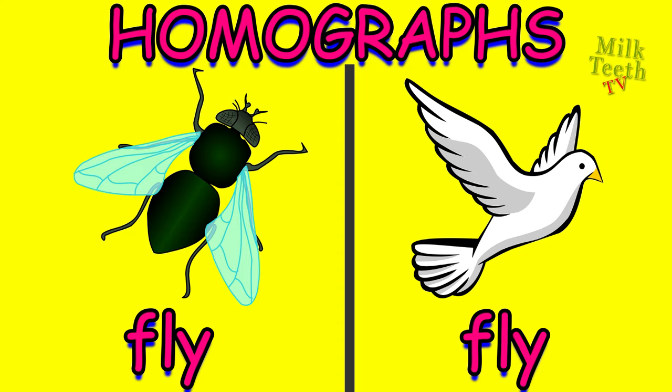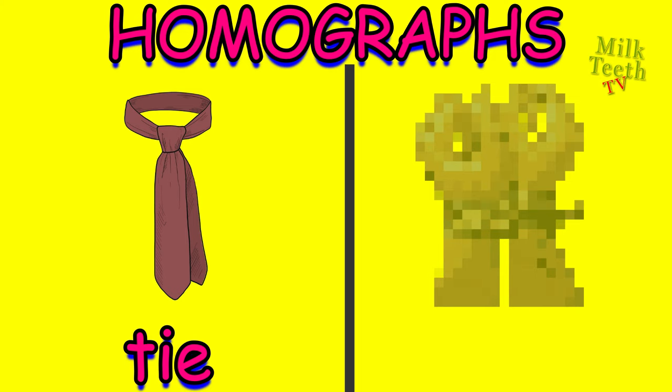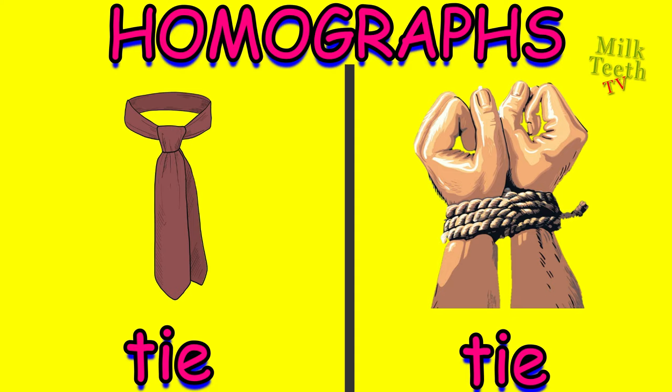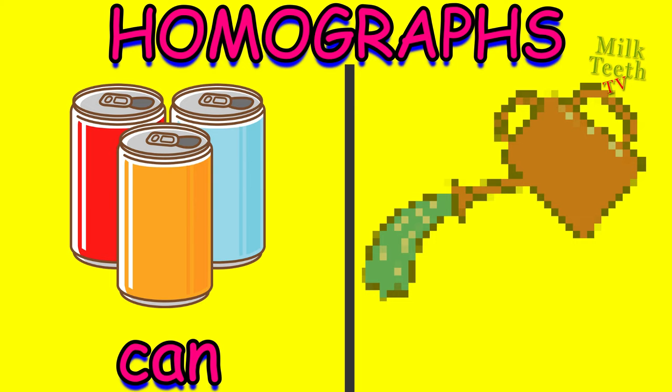Tie — it is used to wear on the shirt. And tie — it is a verb which means to tie something. Can — or the juice can. And can — a watering can, used to water plants.